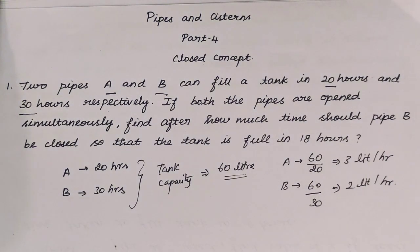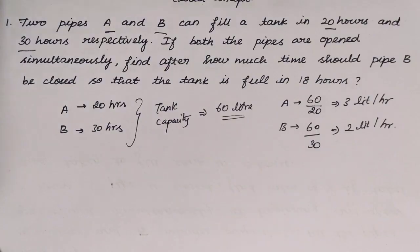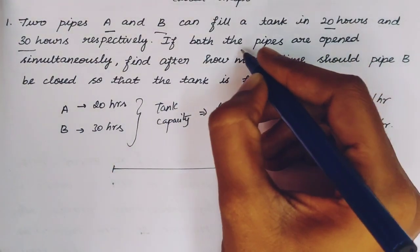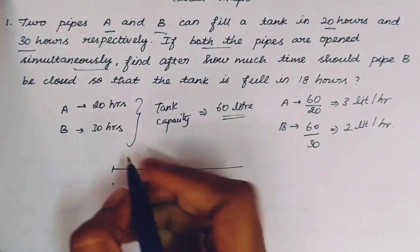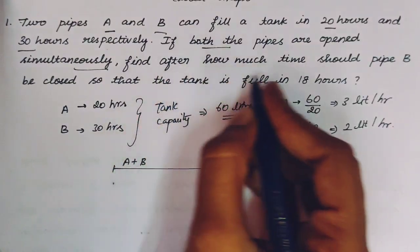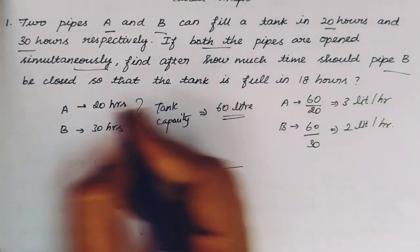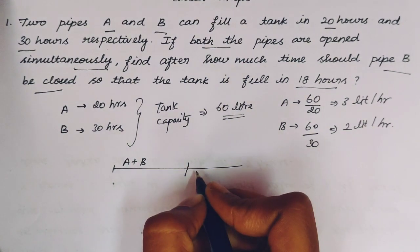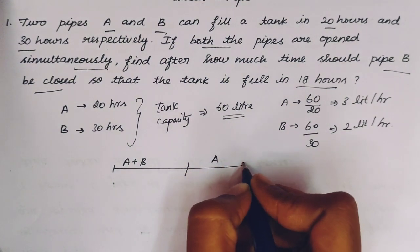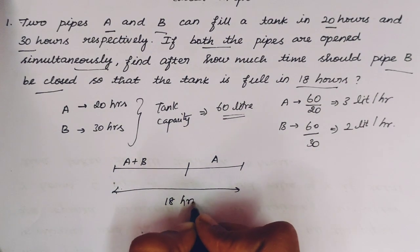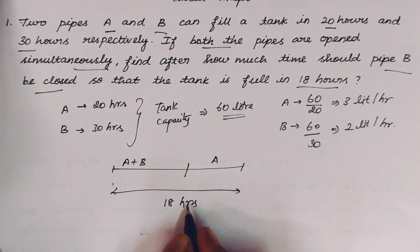B fills 60 liters divided by 30 hours, so 2 liters per hour. So pipe A fills 3 liters in 1 hour and pipe B fills 2 liters in 1 hour. Now, if both pipes are opened simultaneously initially, after some time pipe B is closed, and the total time is 18 hours.